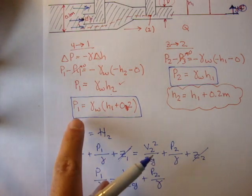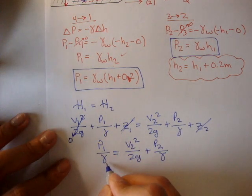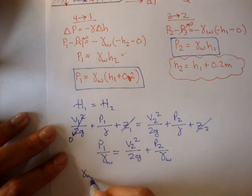So let's plug in P1 and P2. P1 is, this should all be gamma of water.